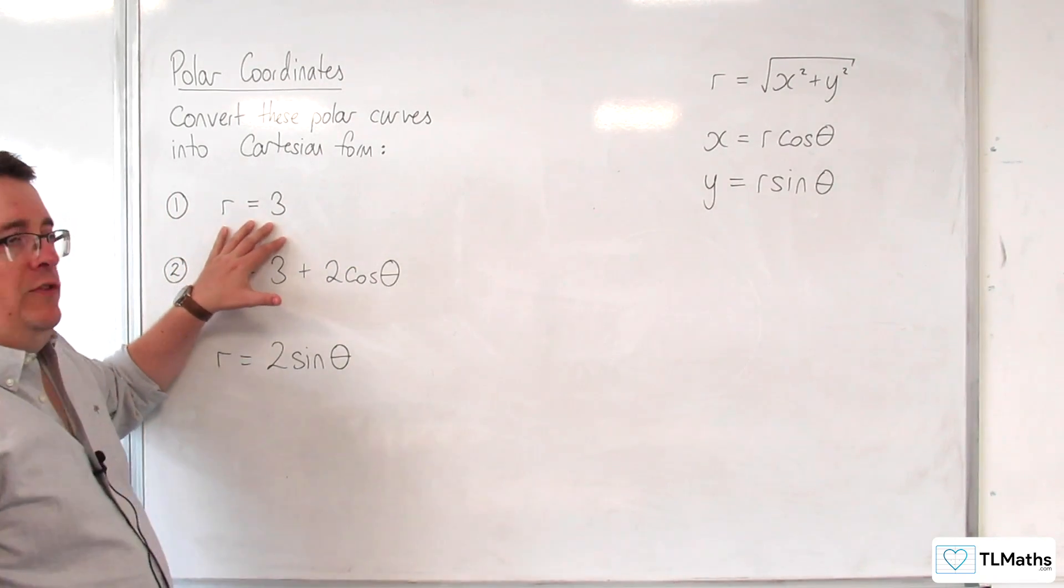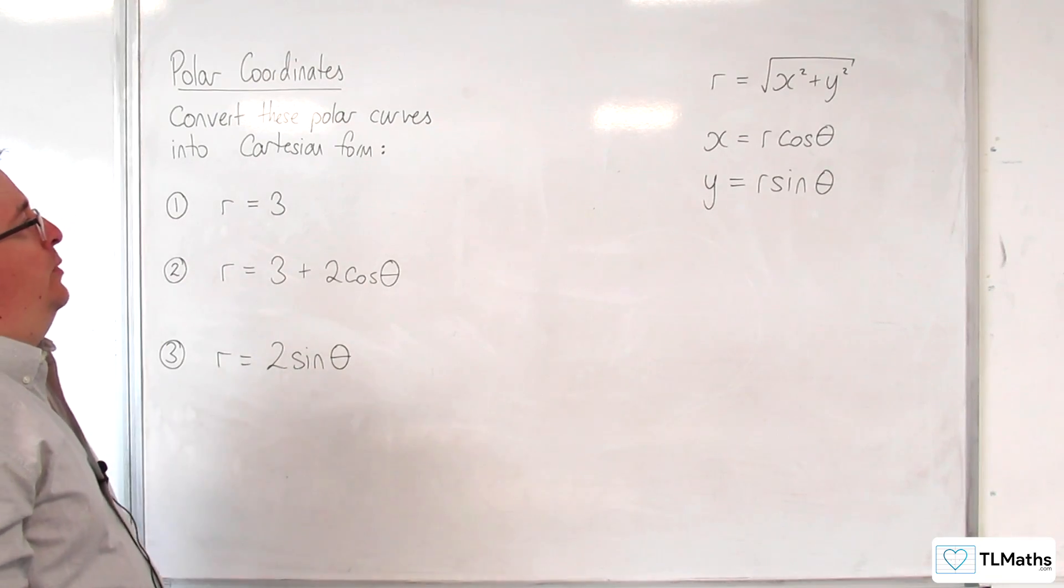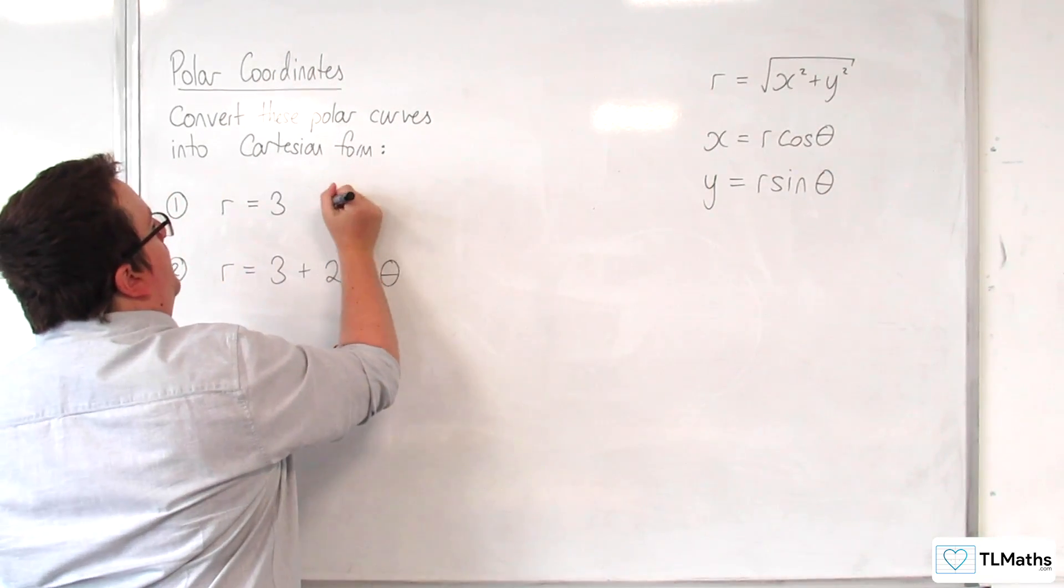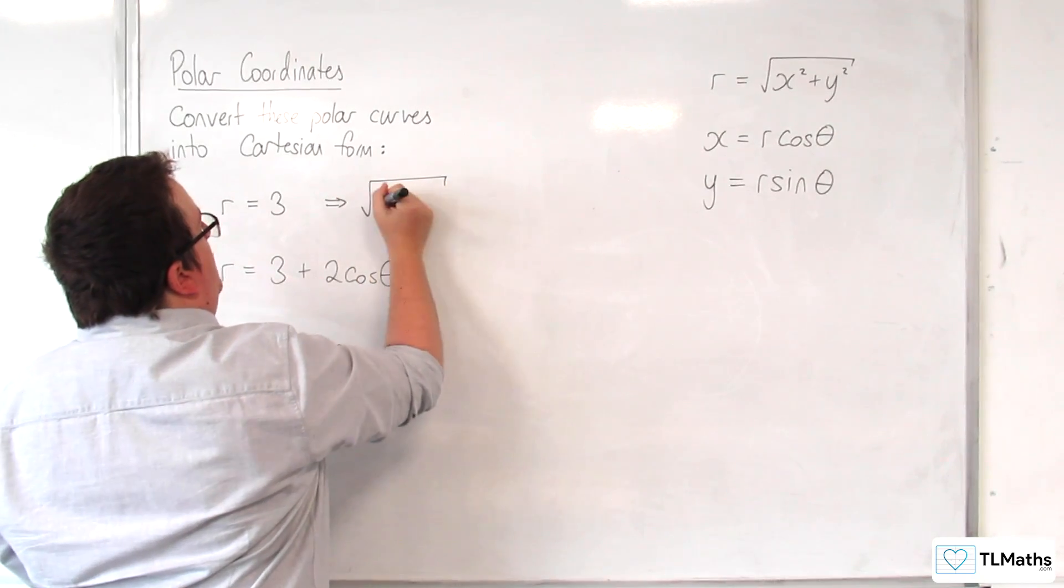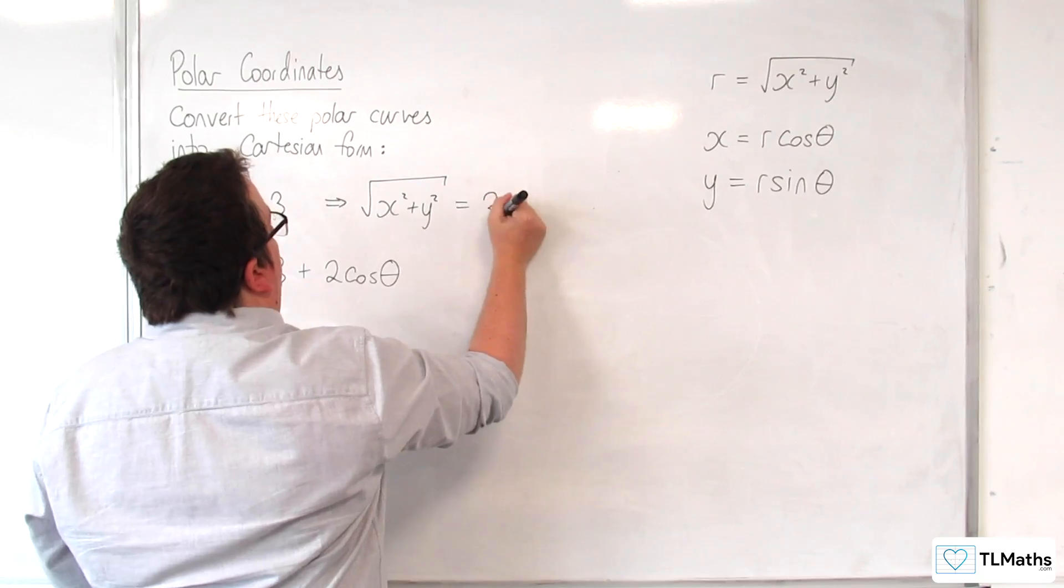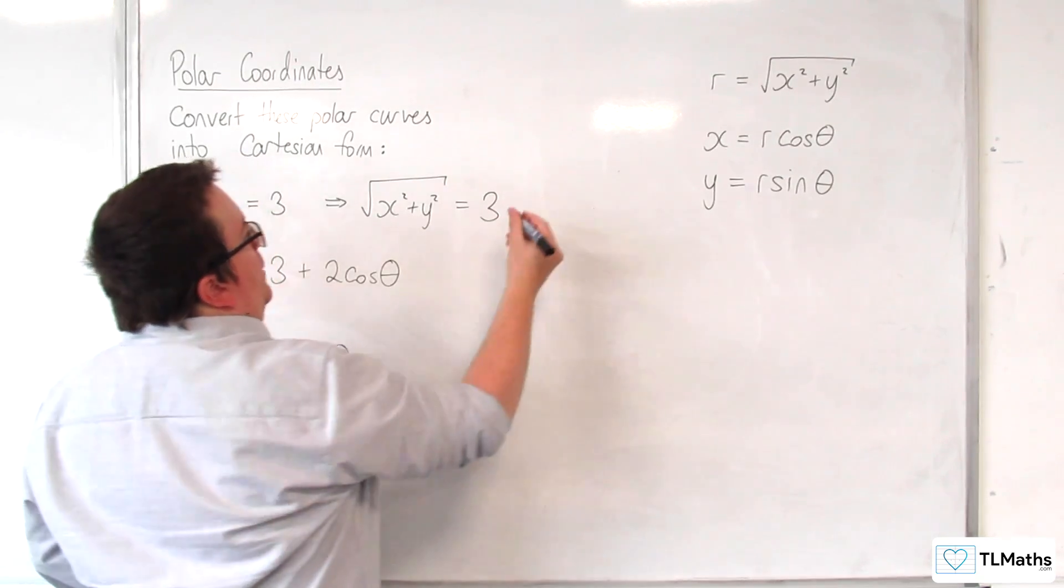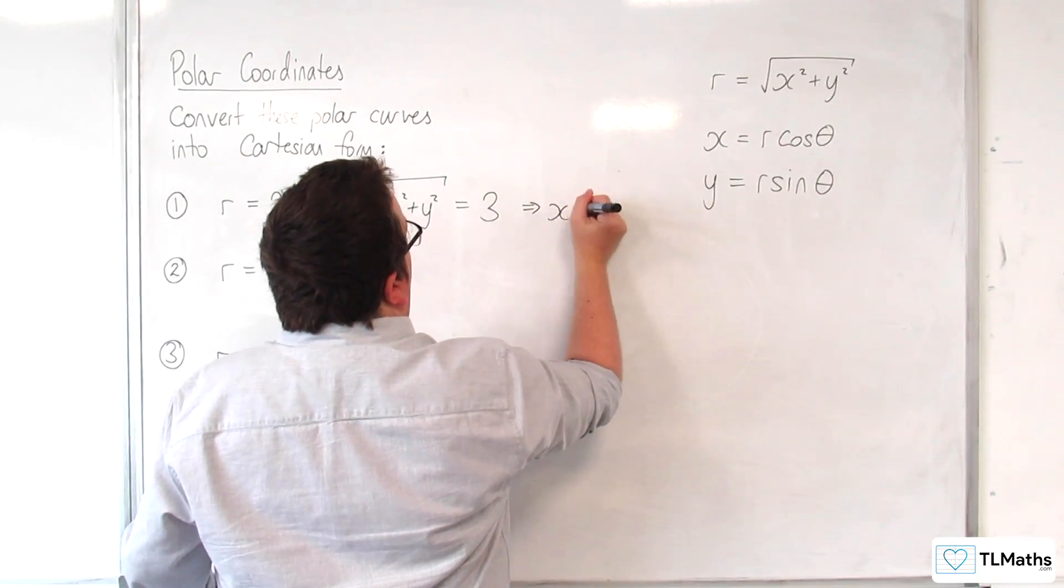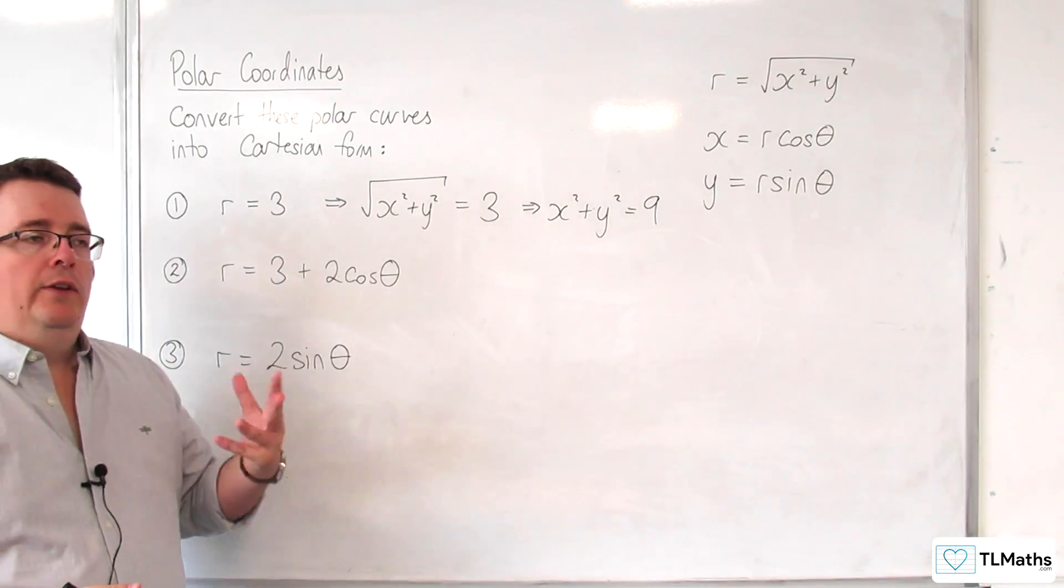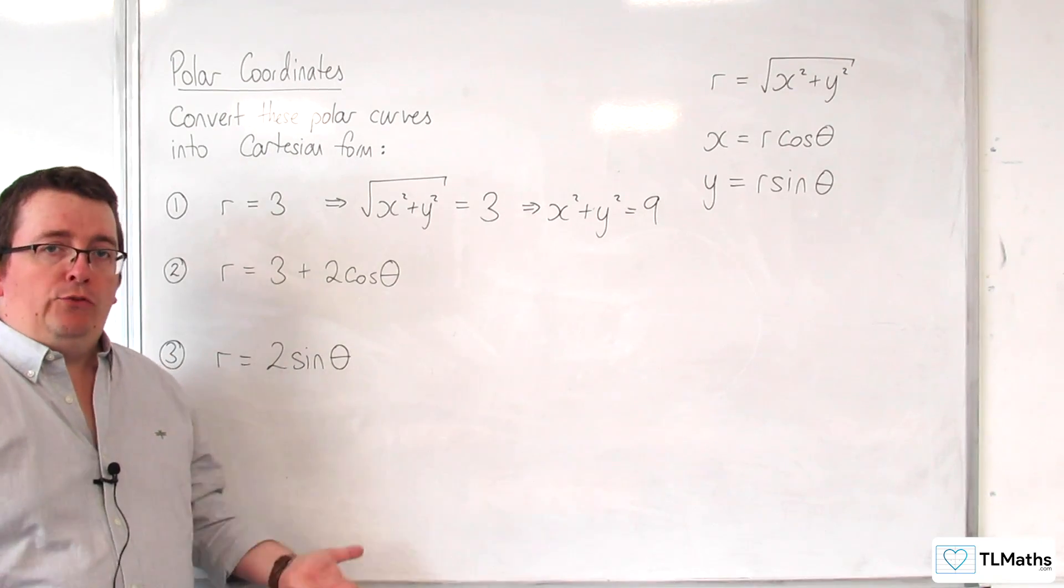So if we look at R is equal to 3, for example, then we do a direct substitution with this one, and we can say that the square root of x squared plus y squared is equal to 3. You can square both sides. And you can see what you've got is a circle centered at the origin with radius 3.